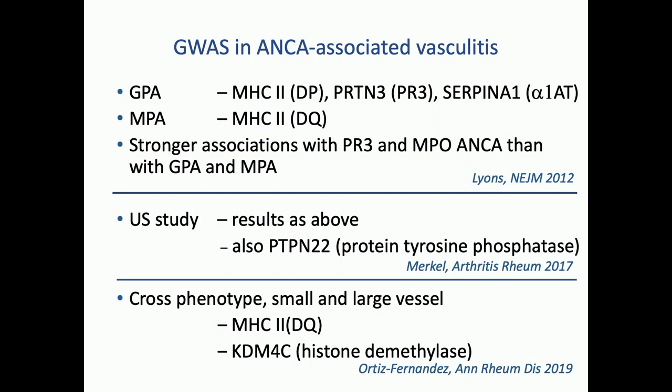In MPA, we only got a hit in the MHC. There were stronger associations with either PR3 and MPO ANCA than with the clinical diagnoses, which has led some people to suggest we reclassify these as MPO-AAV and PR3-AAV — but not everyone agrees. The Americans followed us and found the same findings, but also identified PTPN22, an immune regulatory gene found in other autoimmune diseases. Most recently, again led by Ken Smith, we've done a cross-phenotype study identifying KDM4C, a histone demethylase involved in epigenetic regulation of immune responses.